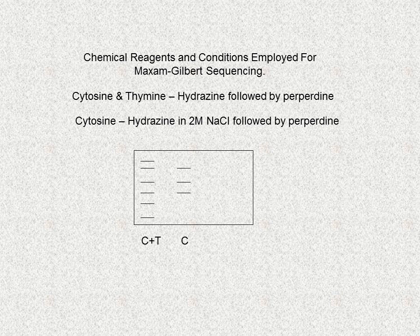By treating a DNA molecule with the chemical hydrazine followed by piperidine, the bases cytosine and thymine are cleaved. Also, hydrazine and 2-molar sodium chloride cleave cytosine only, and therefore from the autoradiograph we can deduce the thymine bands. Overall, from these two reactions we can identify the positions of the cytosine and thymine bases in the DNA molecule. This, coupled with the positions of the adenine and guanine bases, gives us the overall DNA sequence.